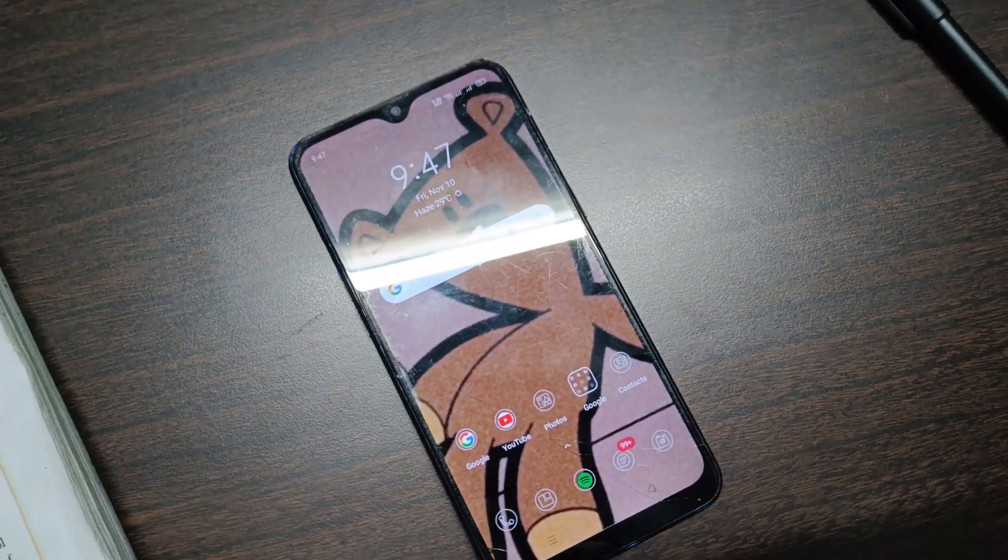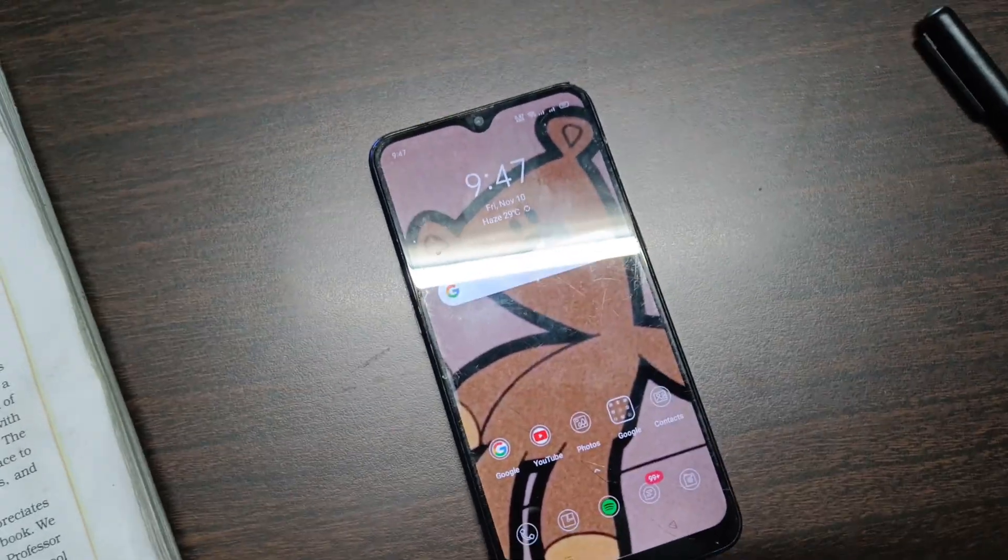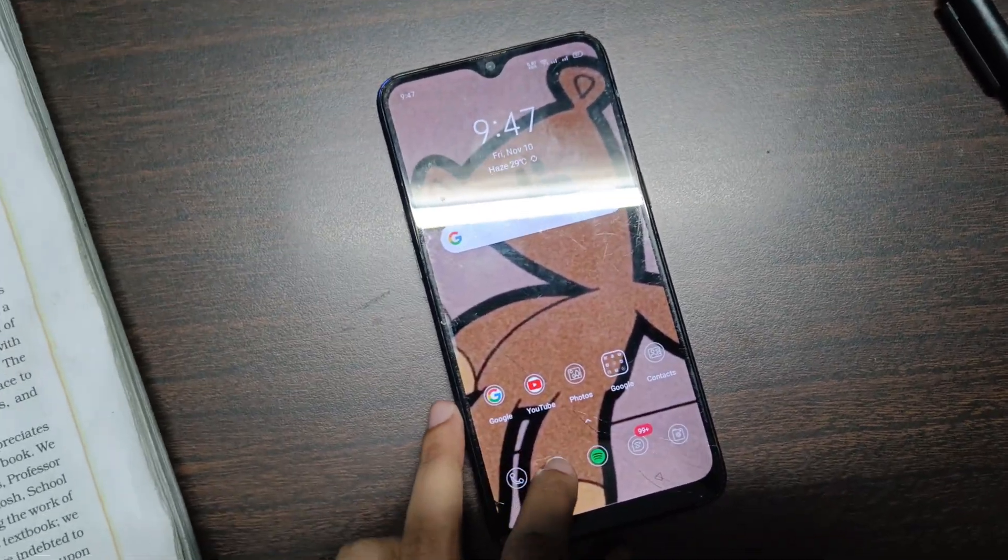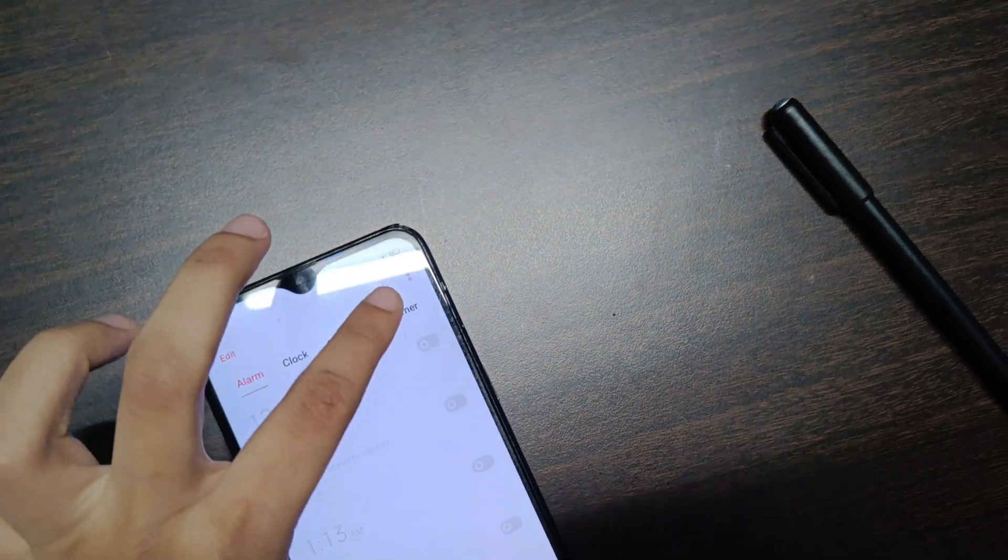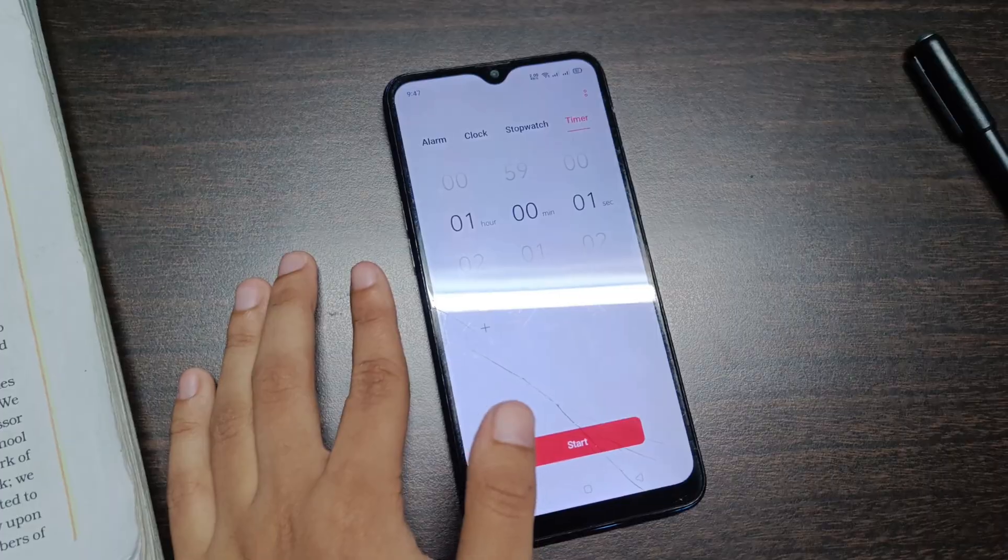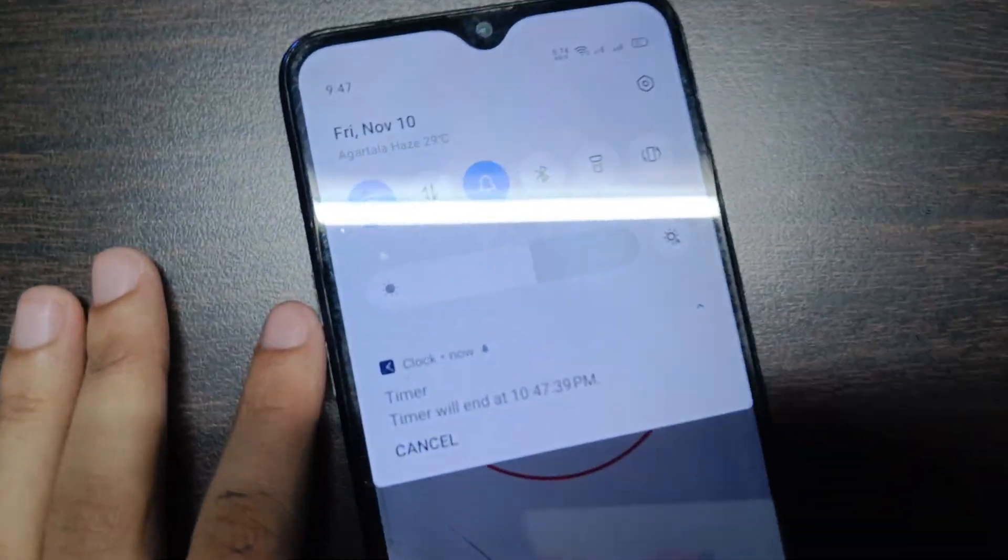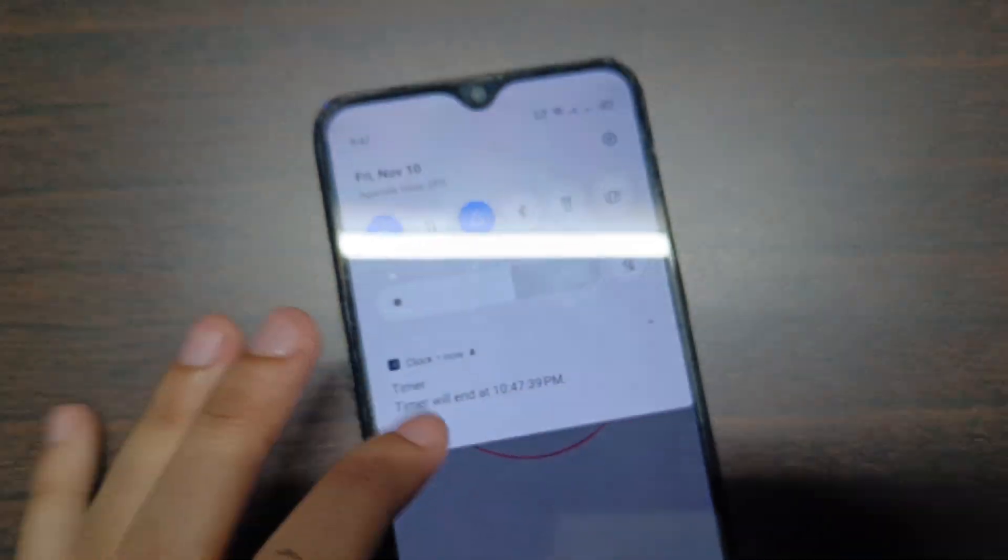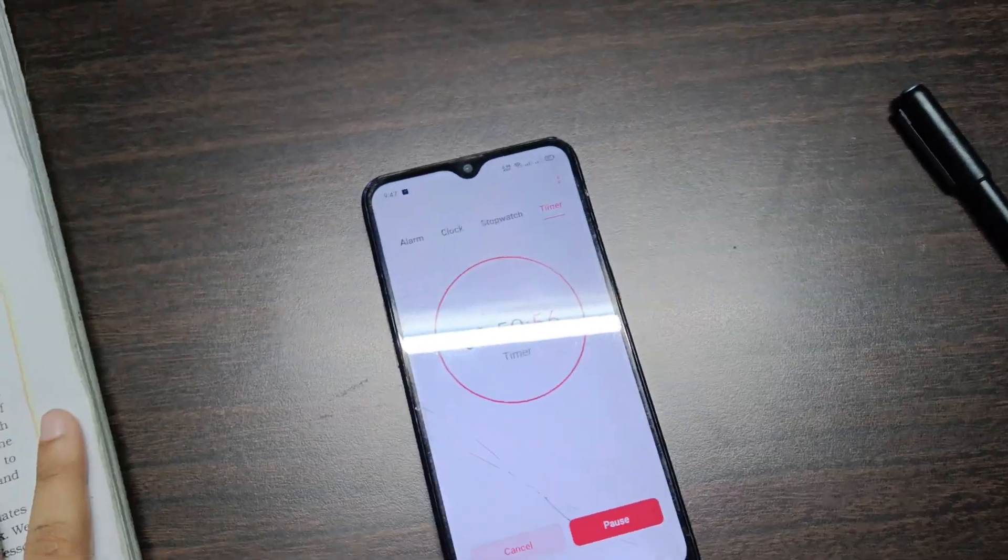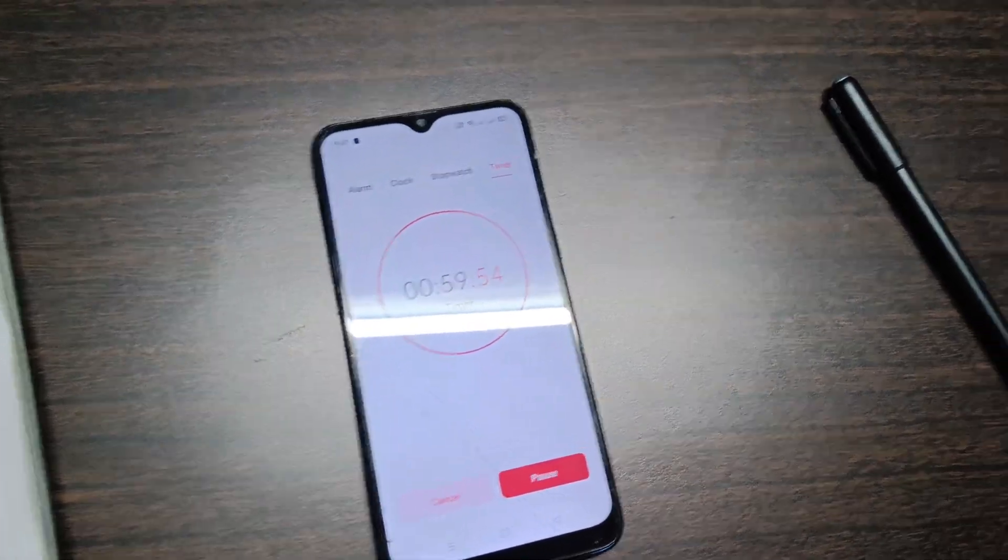I put a timer of one hour right now and I'll start practicing physics. This timer will end at 10:47, so I'll start practicing the chapter Magnetic Effects of Electric Current.